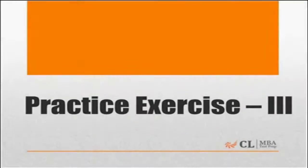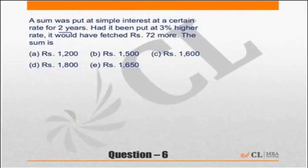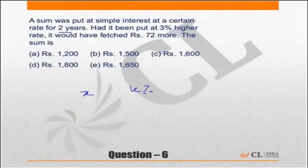The first exercise: a number X is put at simple interest at a certain rate for 2 years. It is put at 3% higher rate and earns 72 more. What is X? Let's assume X is the principal put at simple interest at K percent. If it is put at K percent, the interest for 2 years would be 2K percent.